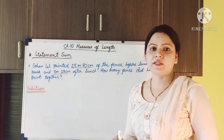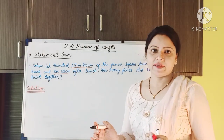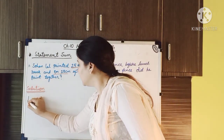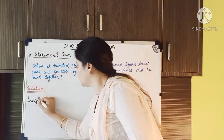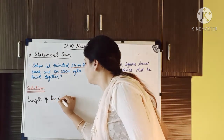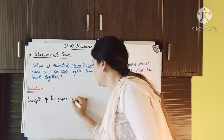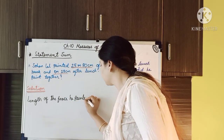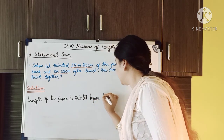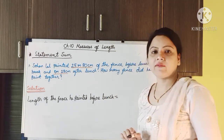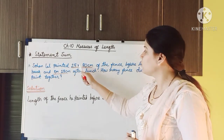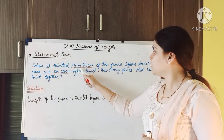Here we will write the first statement: length of the fence he painted before lunch break. It is equal to — first we have to make two columns. As you can see, two different units are there: meter and centimeter.